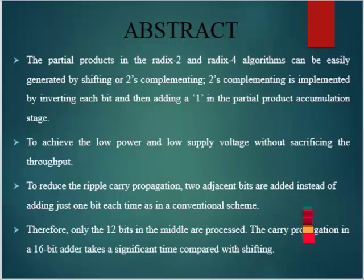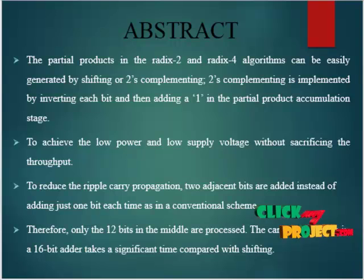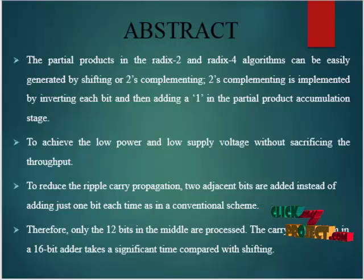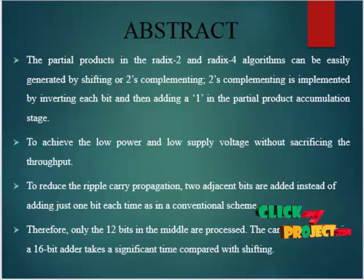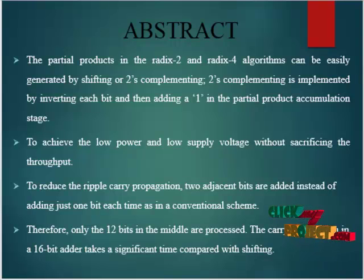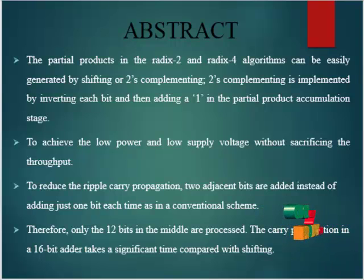The partial product generator uses a tree to implement the sum of partial products, reducing the total multiplication time. The selection of partial products as input to the Wallace tree is controlled by the partial product generator. To determine the multiplier encoder, we go into the partial product generator with input signals of 1, 2, 3, and 4 processes.